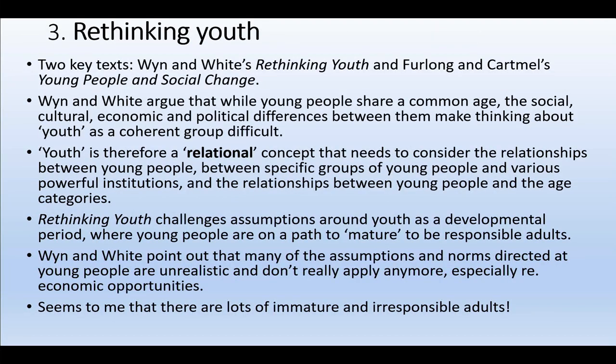A key text here is Wynne and White's classic Rethinking Youth and also Furlong and Carmel's Young People and Social Change — there'll be readings for those in the course guide. In these classic texts published in the 90s, they argue that while there's a group we might call youth who share a similar age bracket — officially around 15 to 25 as defined by Centrelink and similar institutions — it's really difficult to think of that group as a coherent group that all experience the same things. They may experience the same economic, social, and political conditions but in very different ways based on where they grow up, their parents, whether they're male or female, black or white, and all other key sociological contours of inequality.